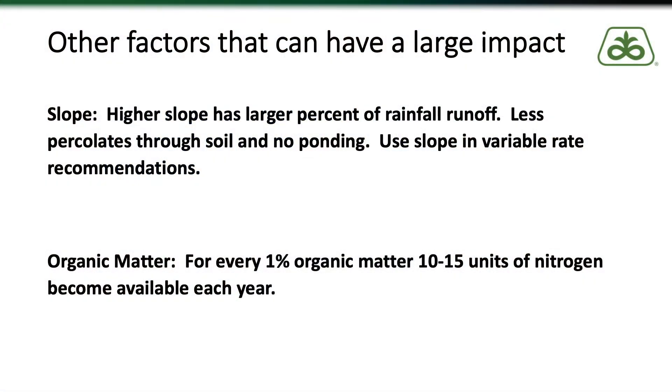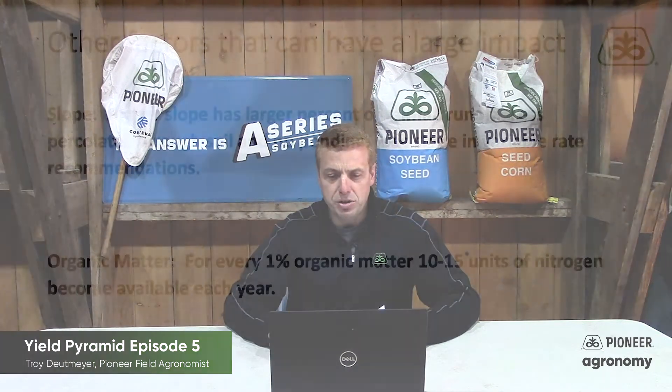Let me share a few factors from local research here in Northeast Iowa. One is the impact of slope on nitrogen use efficiency. In wet growing seasons, the more slope you have on a field, the more surface runoff you get, and therefore the less water that percolates down through your soil profile and the less ponding. This has shown in our research to have a significant impact on nitrogen use efficiency, so when planning your nitrogen program — or if you've had a wet season and are considering supplemental nitrogen — keep slope in your equation.